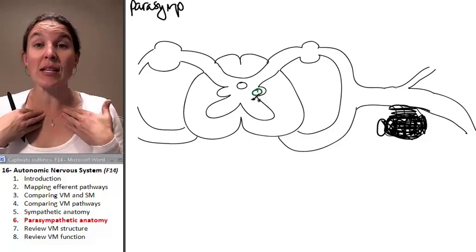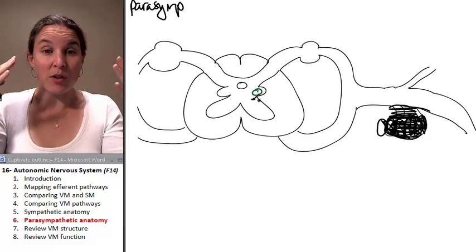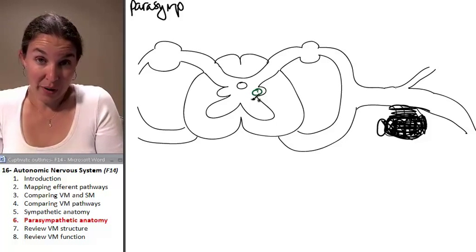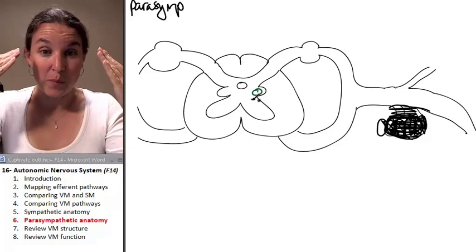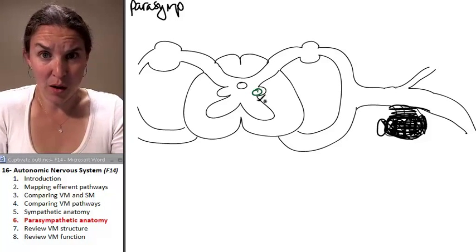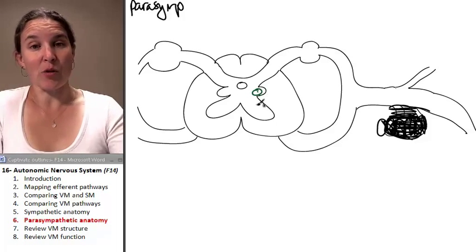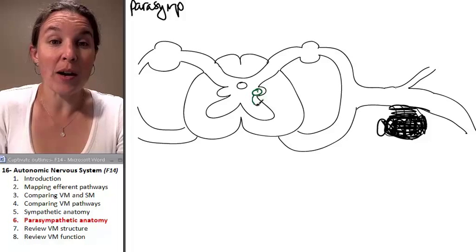And then, of course, in the cranial nerves, the visceral motor fibers are coming out of the brain. So they're not going to have, we're not mapping it onto the spinal cord at all because it's coming out of brain. But in the sacral region, for the areas that do map,